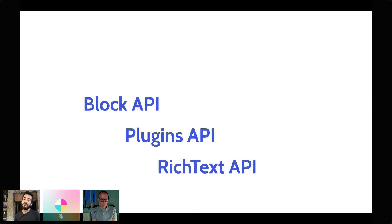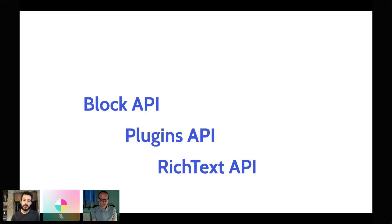Hopefully our examples were compelling enough for you as a developer and as a user. I invite you to look up all three of these API families: block, plugin, and rich text. I really look forward to seeing all of your inventions. Thank you very much. You can find Grzegorz at gzolo.pl and Miguel at lambda.blog, and also find us on the Core Editor Slack channel in WordPress and in the Gutenberg GitHub repository.